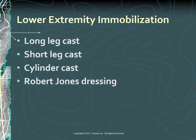Lower extremities are often immobilized by the long leg cast, short leg cast, cylinder cast, or prefabricated splint or immobilizer. The usual indications for a long leg cast are an unstable ankle fracture, soft tissue injuries, a fractured tibia, and knee injuries. The cast usually extends from the base of the toes to the groin and gluteal crease. The short leg cast is used primarily for stable ankle and foot injuries. A cylinder cast, used for knee injuries or fractures, extends from the groin to the malleola of the ankle.